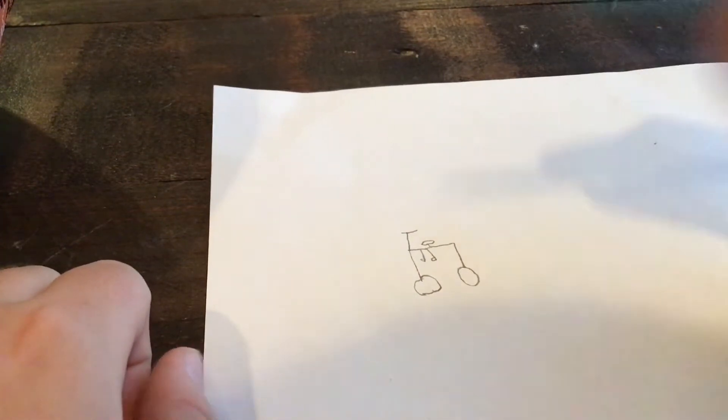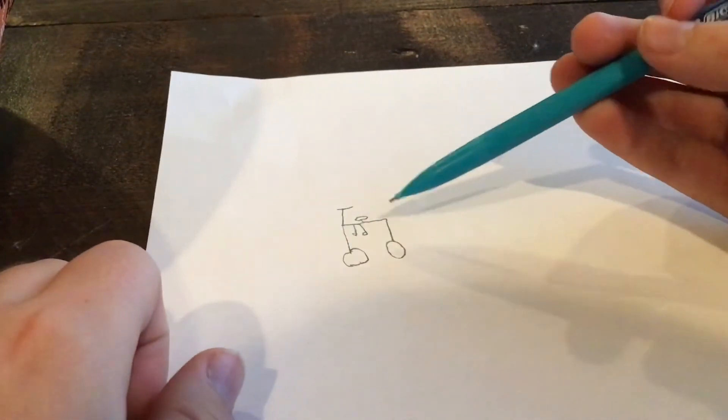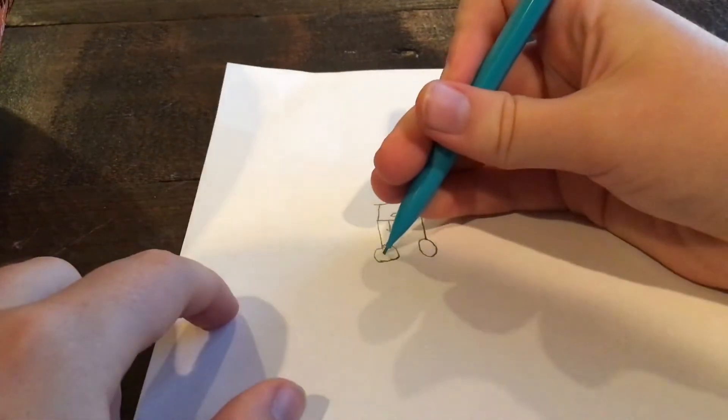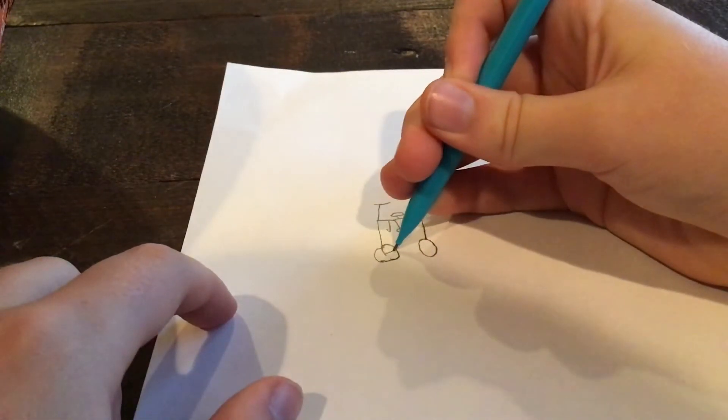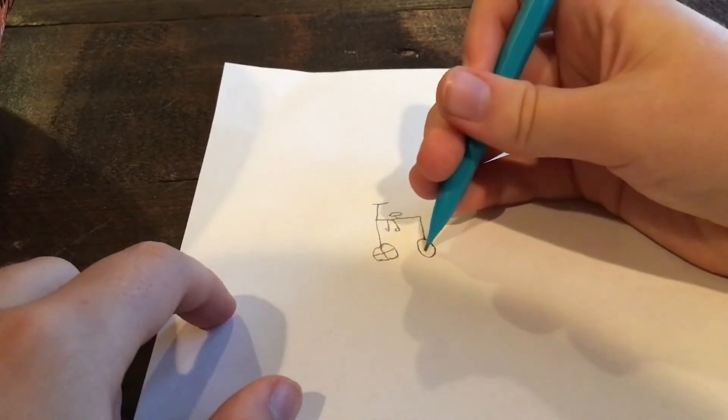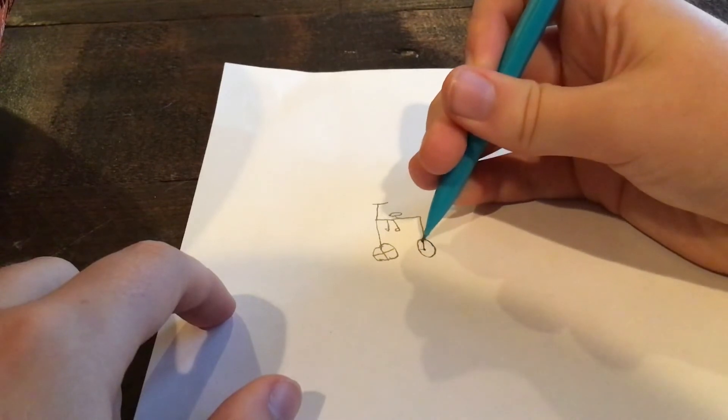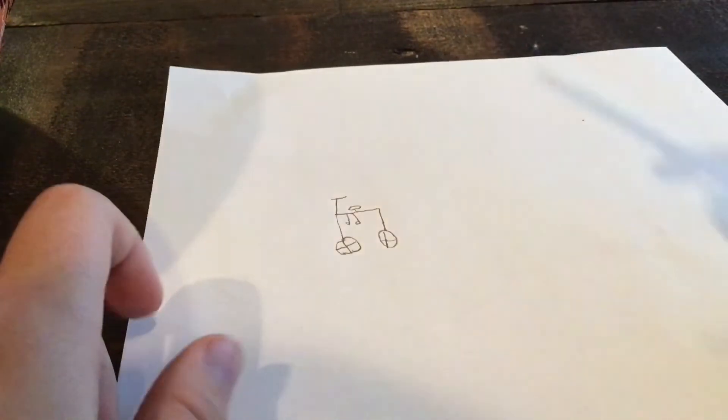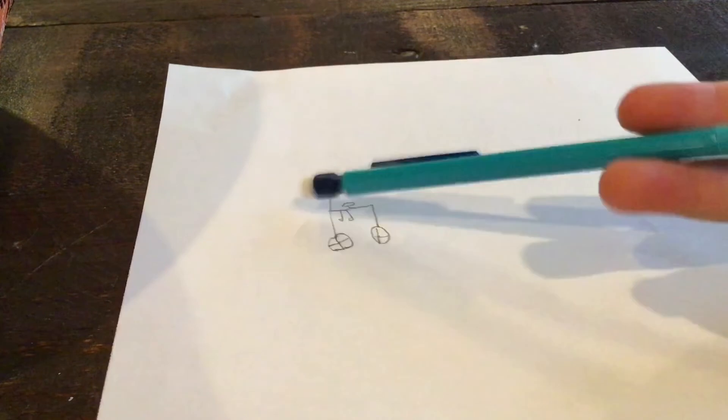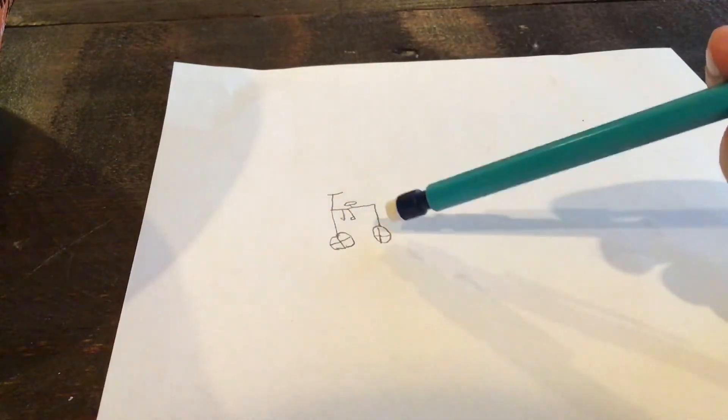Super easy. But you can add more details, like, you can add those to the wheels. You can add as many details as you want. But that was just a quick how to draw for a bike, super easily.